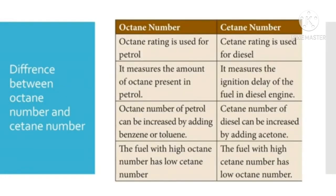Some of the differences between octane number and cetane number: octane rating is used for petrol; cetane rating is used for diesel. Octane number measures the amount of octane present in petrol. Cetane number measures the ignition delay of the fuel in a diesel engine. Octane number of petrol can be increased by adding benzene or toluene. Cetane number of diesel can be increased by adding acetone. The fuel with high octane number has low cetane number, and the fuel with high cetane number has low octane number.